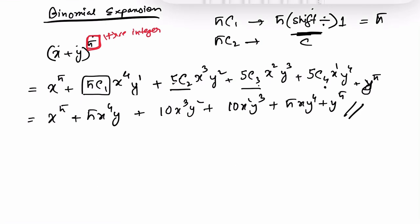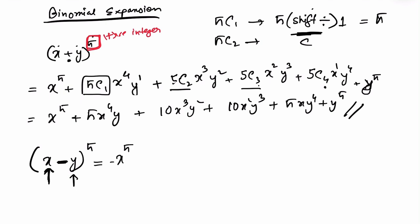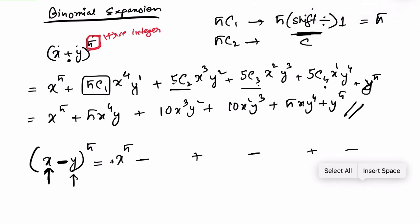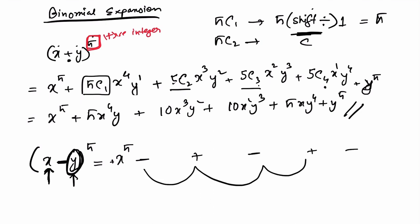If you have a negative sign — like x minus y — select only y (without the sign) as your second term. For the sign, use alternating plus and minus along your expansion: positive, negative, positive, negative. This is easier than carrying the negative sign through each term.